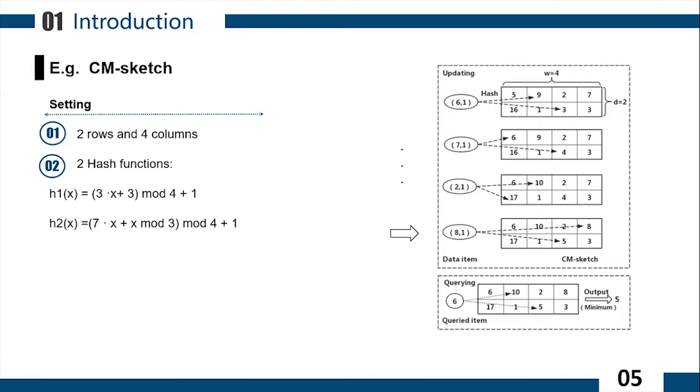Similarly, when data item 8 arrives, we find the corresponding counters and update them by the same hash function. When querying data item 6, the corresponding counters are found by two hash functions. Then we will get the values 5 and 10. We return 5 as the final result because 5 is smaller than 10.